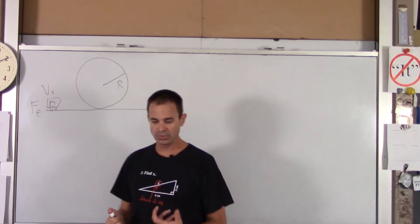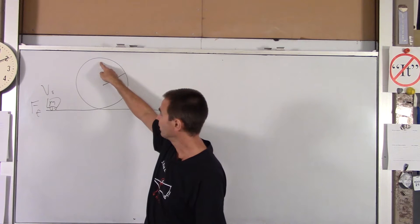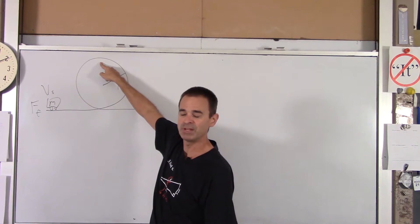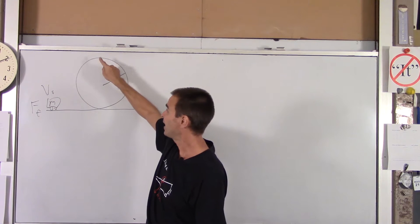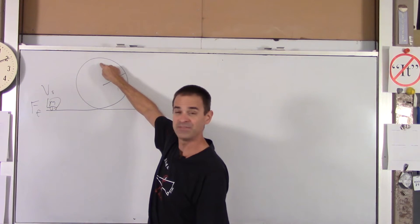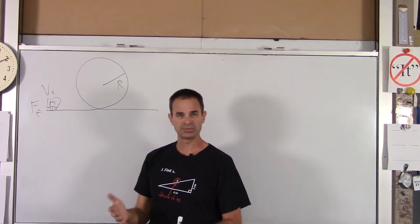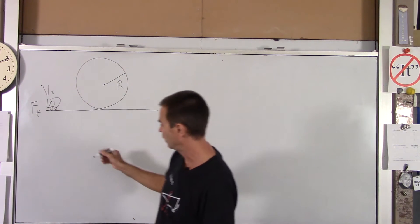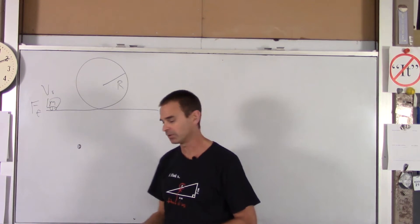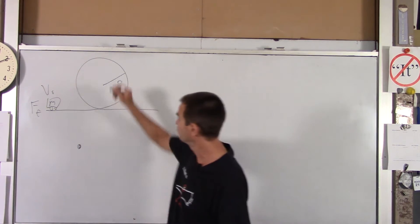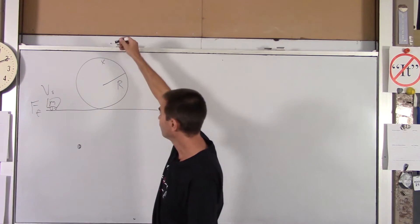I want to know how fast the coaster has to be going at the bottom to make it to the top. To do that, there's something we've got to do first: when the roller coaster gets up to the top of the loop, it still needs to be moving with some minimum velocity. We've got to find that first — we'll call that v_f — so the passengers don't fall out. That's a net force equals ma problem.